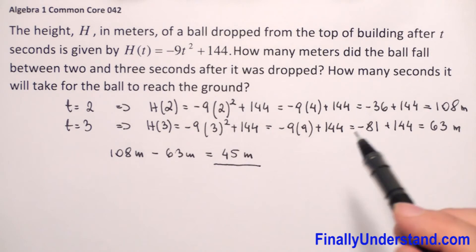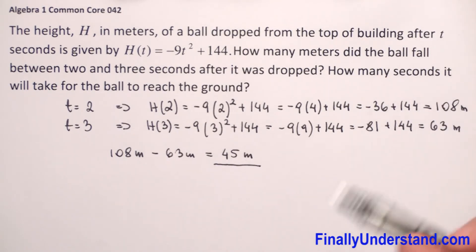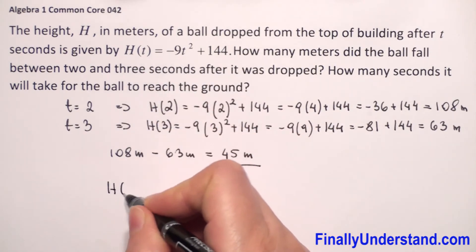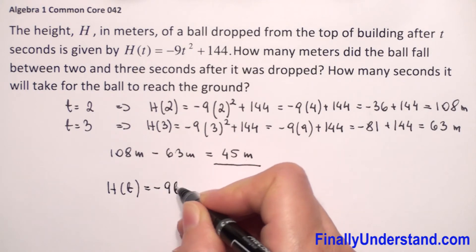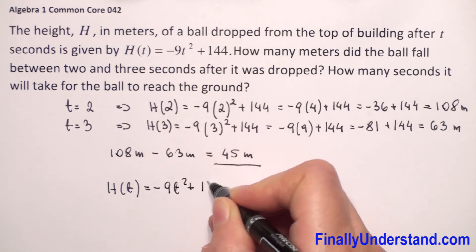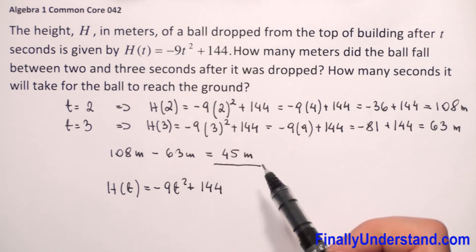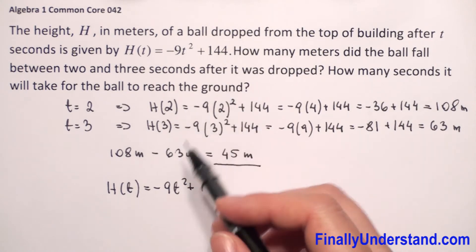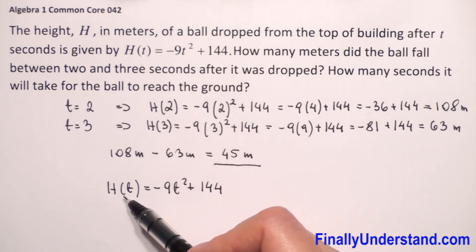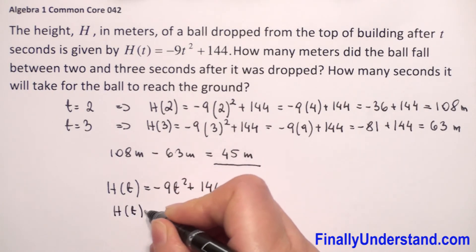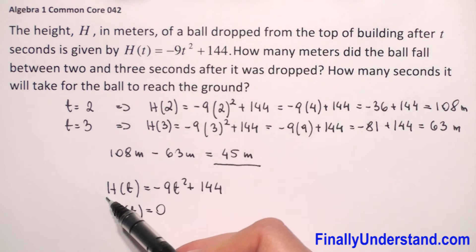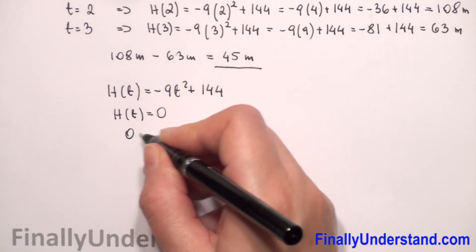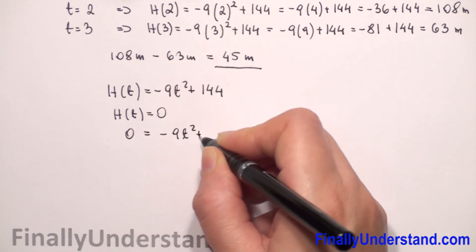Now for the second question, we need to find t, because t represents the seconds. Our equation is h(t) = -9t² + 144. Because we need to find how many seconds it will take for the ball to reach the ground, the height at ground level will be 0. So h(t) = 0, and we substitute to get 0 = -9t² + 144.